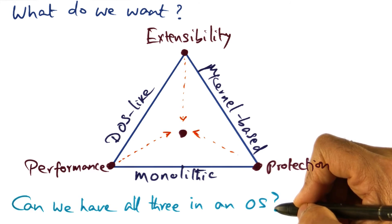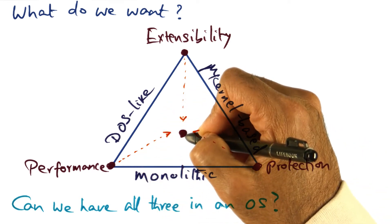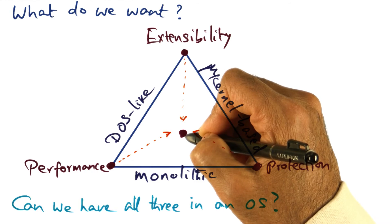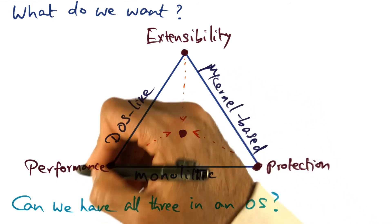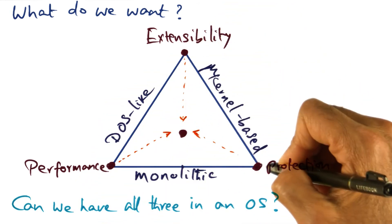In other words, what we would like the operating system structure to be such that we get to this center of the triangle that caters to all three attributes: performance, extensibility, and protection.